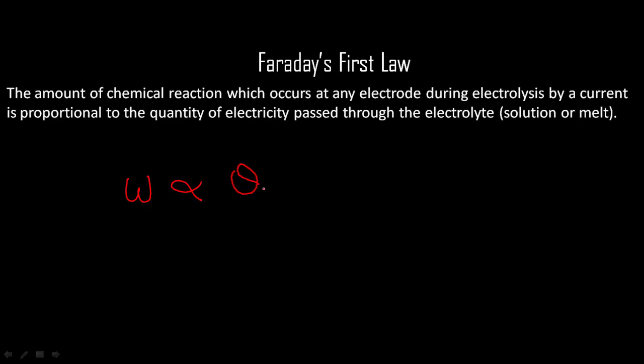Amount of charge passed through that solution, and charge means current into time. This is the charge. Now to remove this proportionality sign, I use a constant Z, so it becomes Z into I into T, where Z is electrochemical equivalent for any cell. It is defined as the amount of substance liberated when one ampere of current is passed through the cell for one second. This is Faraday's first law of electrolysis.